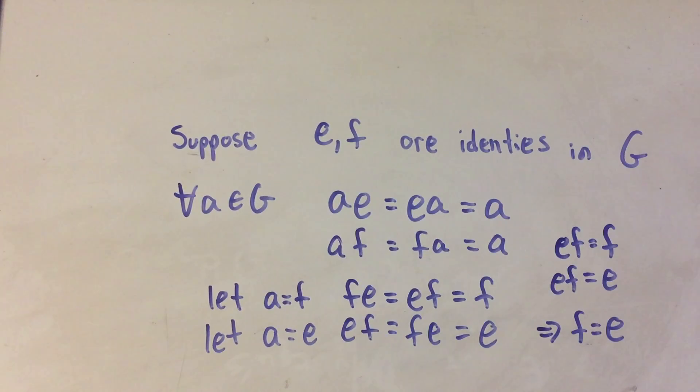And there is, in fact, only one identity element in any group. So there's your proof. It's not too bad, it's pretty quick. I hope you enjoyed it. If you want to, please rewind and watch the video again, and have a great day.